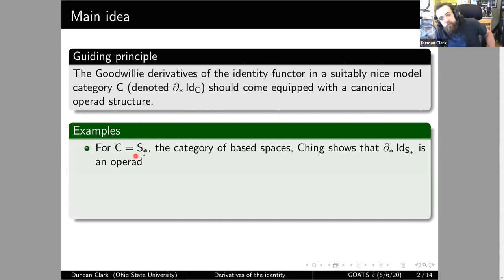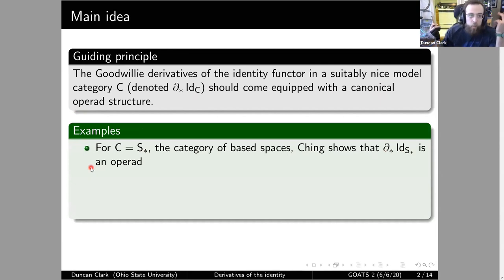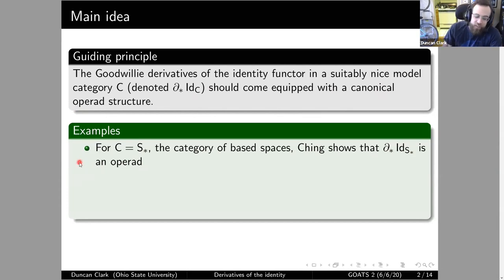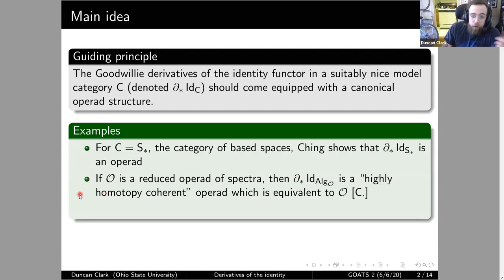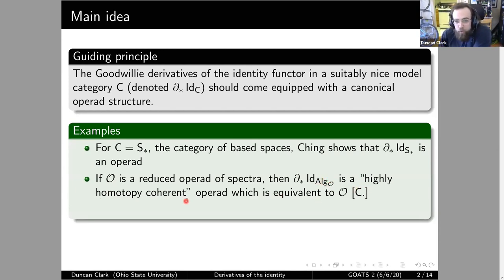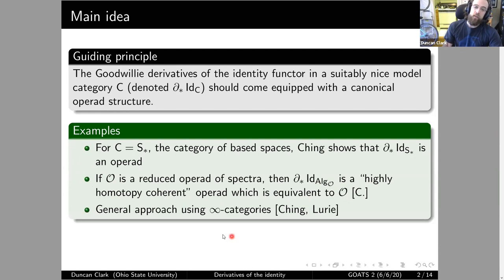Some examples: for the category of based spaces, Ching shows in his thesis work that the derivatives of the identity in this category form an operad, by constructing a very interesting way of describing an operadic structure. This is a fairly difficult paper to parse. Another example, and this is my work on the subject, is that if O is a reduced operad in spectra, then the derivatives of the identity in the category of algebras over this operad is what I'm calling a highly homotopy coherent operad. Moreover, this highly homotopy coherent operad is equivalent to the one we started with — this has been a conjecture for a while, and recently I was able to prove this. More generally, there's an approach using infinity categories outlined by Lurie and Michael Ching.